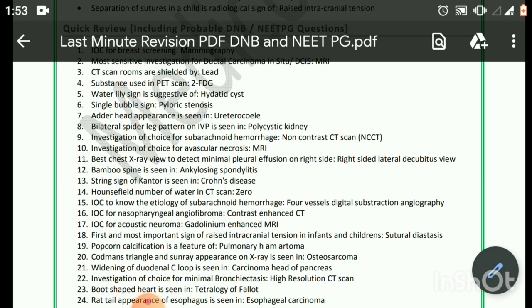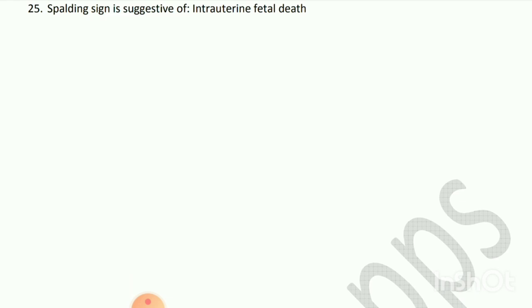Widening of duodenal C-loop is seen in carcinoma of the head of pancreas. Investigation of choice for minimal bronchiectasis is high-resolution CT scan. Boot-shaped heart is seen in tetralogy of Fallot. Rat tail appearance of the esophagus is seen in esophageal carcinoma. Spalding sign is suggestive of intrauterine fetal death.